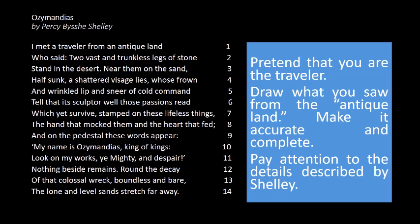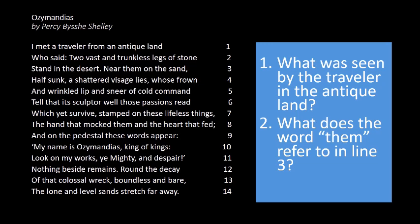Pay attention to the details described by Shelley, because when you have a poem, you have to visualise what you are reading. What did the traveller see? In line 2: 'Two vast and trunkless legs of stone.' He saw legs, but these legs are trunkless — meaning there is no body anymore, only the legs. The word trunkless is like the trunk of a tree; only the legs are standing. These legs are made of stone, they are big, and they are standing in the desert.